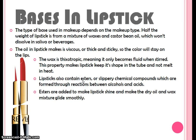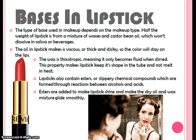The type of base used in makeup depends on the makeup type. Half the weight of lipstick comes from a mixture of waxes and castor bean oil, because this won't dissolve in saliva or beverages. The oil makes lipstick viscous — thick and sticky — so the color stays on the lips. The wax in lipstick is thixotropic, meaning it only becomes fluid when stirred, which keeps lipstick from melting and helps it stay in shape. Lipstick also contains esters, slippery chemical compounds formed through reactions between alcohols and acids, which are added to make lipstick shine and help the dry oil and wax mixture glide smoothly.